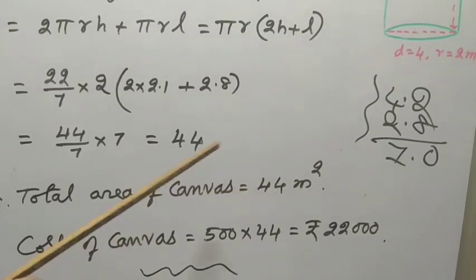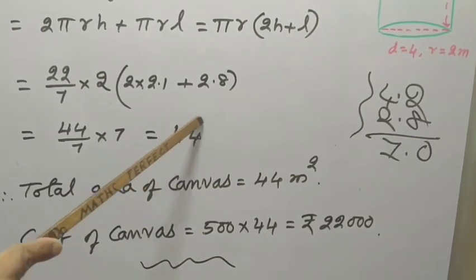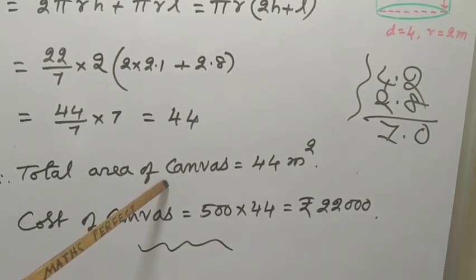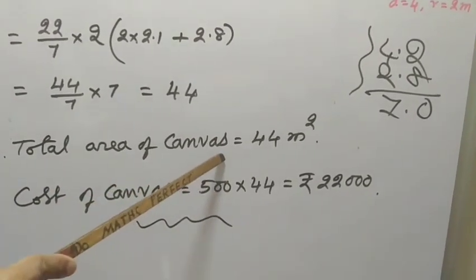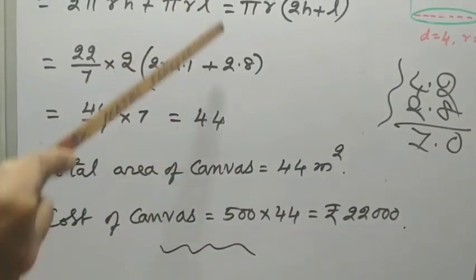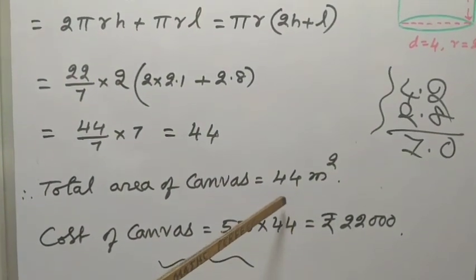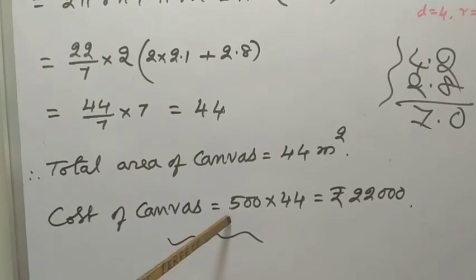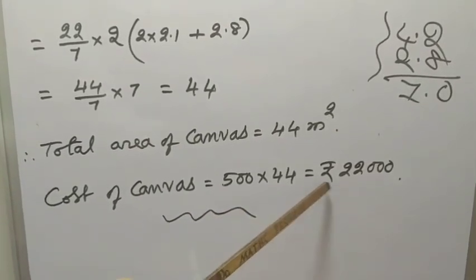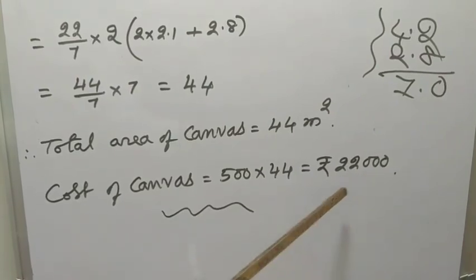Area of canvas equal to 44 meter square. Directly, very simple method, you can find it. Now, cost of canvas equal to, it is given 500 into 44, that is equal to 22,000.